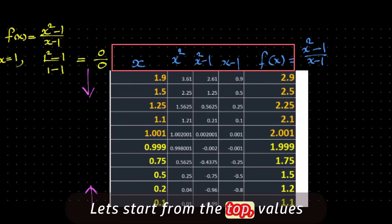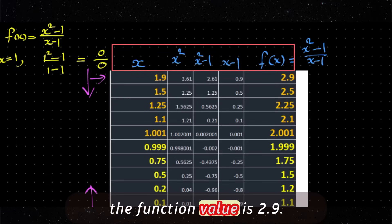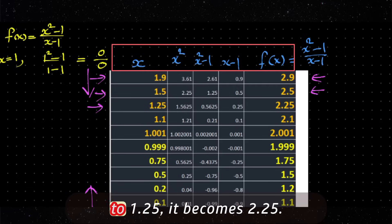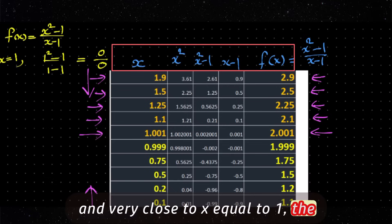Let's start from the top, values greater than 1. At x = 1.9, the function value is 2.9. At x = 1.5, it's 2.5. At x = 1.25, it becomes 2.25. Then at x = 1.1, it's 2.1 and very close to x = 1. The function value is 2.001, almost 2.